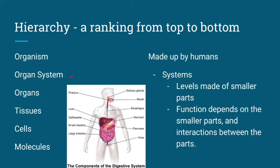The big idea I want you to learn here is that function depends on the smaller parts. So the function of an organ, like the heart, depends on the smaller parts — the tissues that are in the heart. Each of these systems are made up of smaller parts, and it's the interaction of those parts that allow each of the systems to work up to the organism level. The reason you work is because molecules are working together to make up cells, which work together to make up tissues, which work together to make up organs and organ systems, which work together to make you function.